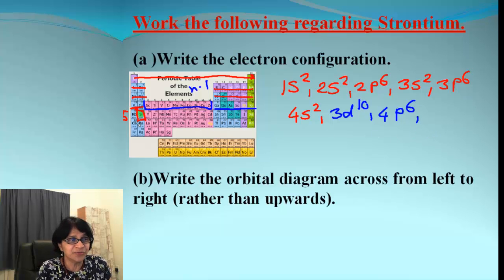Now, be careful. In the fifth period, we begin and strontium is the second element. It's ending in s block. So, we have 5s and since strontium is second, this is 1 and this is 2, so we end up having 2 electrons. So, what we got is the electron configuration for strontium.